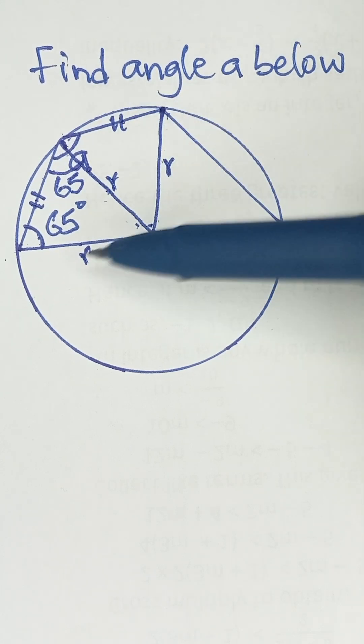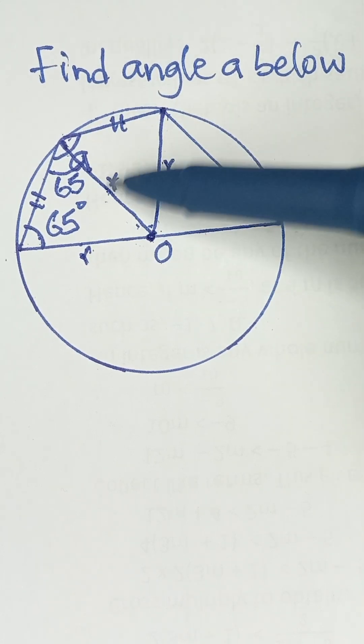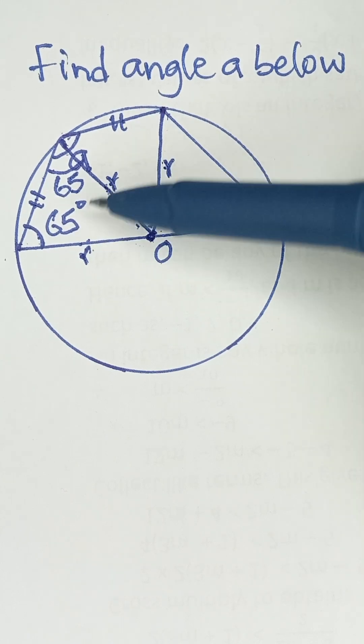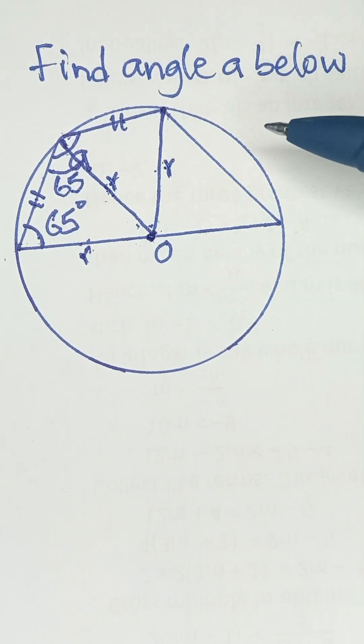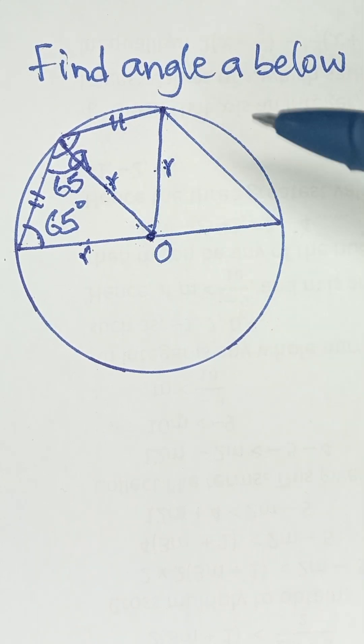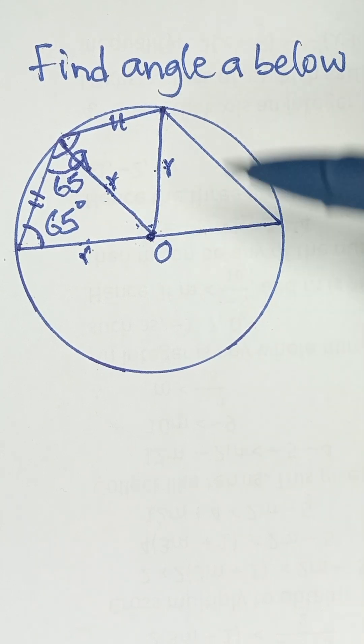You can see this side is equal to this side, this side is equal to this side, and this side is equal to this side. So these two triangles are equal triangles, and in equal triangles like this, all their angles are also equal.